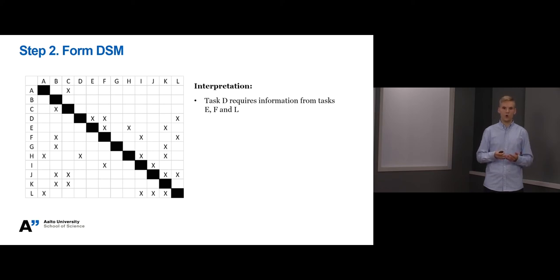For instance, row D means that task D requires information from tasks E, F and L. In turn, column B means that task B produces information to tasks C, F, J, G and K.